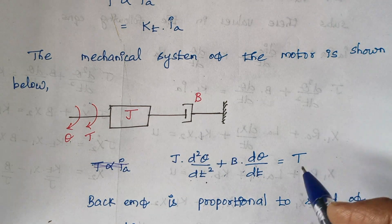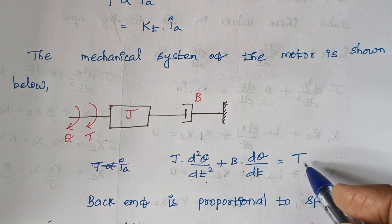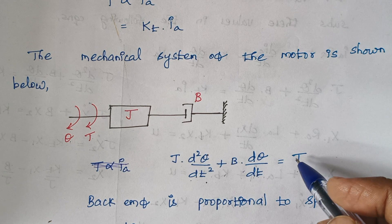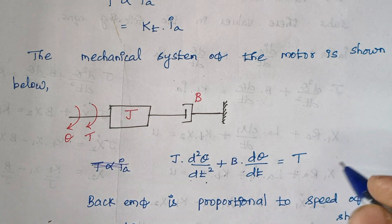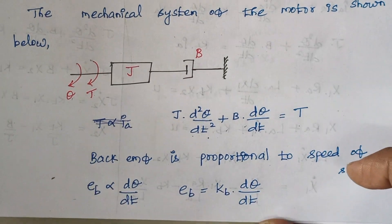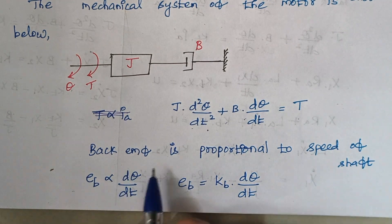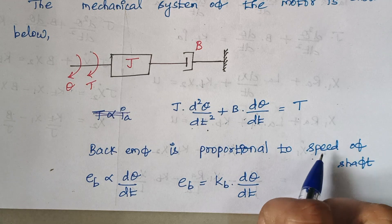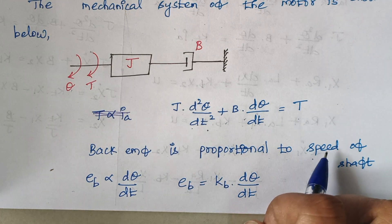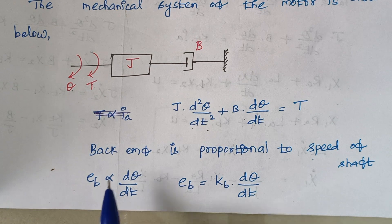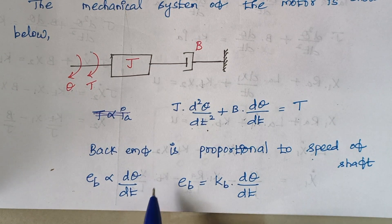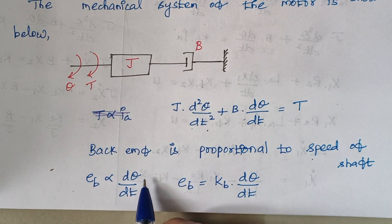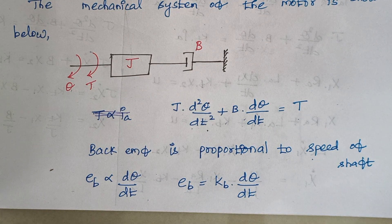Now here comes the back EMF. The back EMF is proportional to speed, and speed is nothing but angular velocity. So back EMF is directly proportional to angular velocity, and introducing a proportionality constant: EB = KB·(dθ/dt).